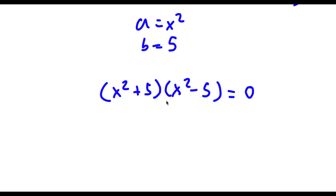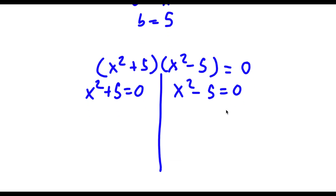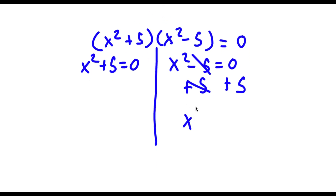So now this is going to give me two equations. I have x squared plus 5 is equal to 0, and I have x squared minus 5 is equal to 0. Let's first start with x squared minus 5 is equal to 0. I'm going to start by adding 5 on both sides. These two cancel out, and I'm left with x squared is equal to 5.